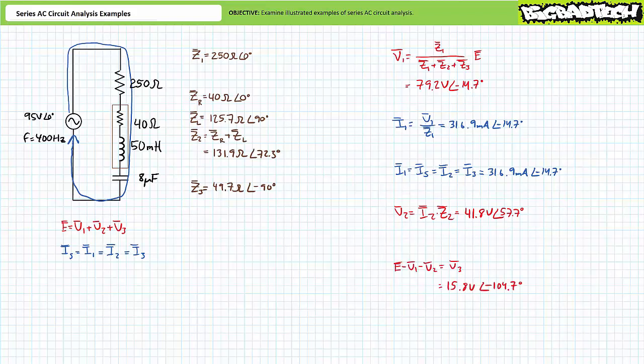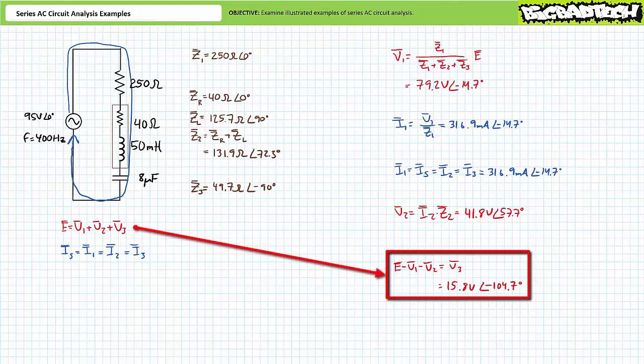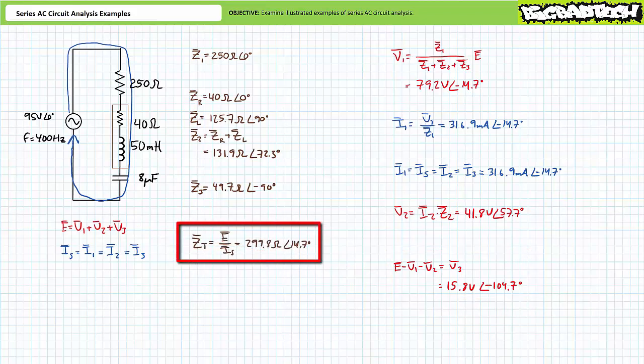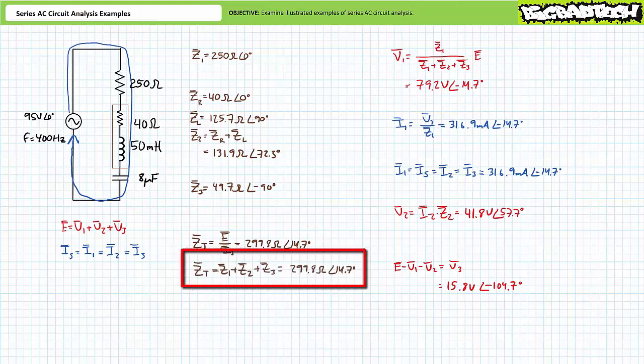Let's make use of Kirchhoff's voltage law to find V3. We know the source voltage and we just solved for the voltage drops across the first and second elements. A rearrangement of the Kirchhoff's voltage law equation solving for unknown voltage V3 suggests that V3 equals 15.8 volts at an angle of negative 104.7 degrees. As a means of checking our work, supply voltage over source current yields a total impedance of 299.8 ohms at an angle of 14.7 degrees. Similarly, the summation of Z1, Z2, and Z3 also yields a total impedance of 299.8 ohms at an angle of 14.7 degrees.